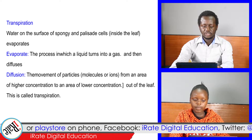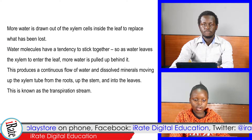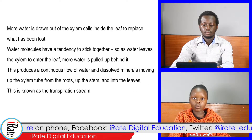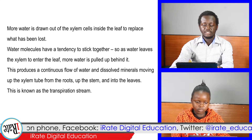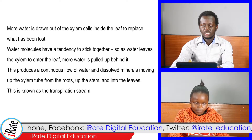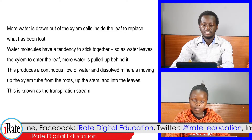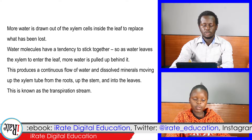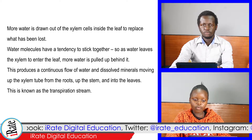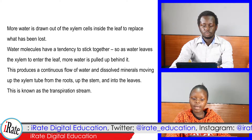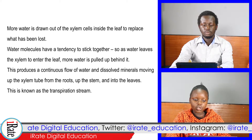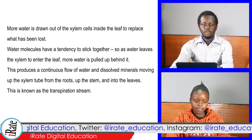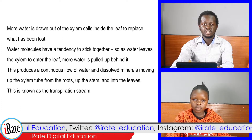This is called transpiration. More water is drawn out of the xylem cells inside the leaf to replace what has been lost. Water molecules have a tendency to stick together, so as water leaves the xylem to enter the leaf, more water is pulled up behind it. This produces a continuous flow of water and dissolved minerals moving up the xylem tube from the roots, up the stem and into the leaves. This is known as the transpiration stream.